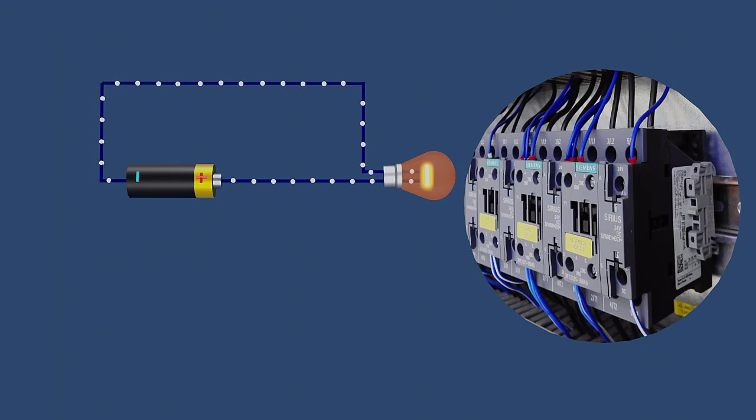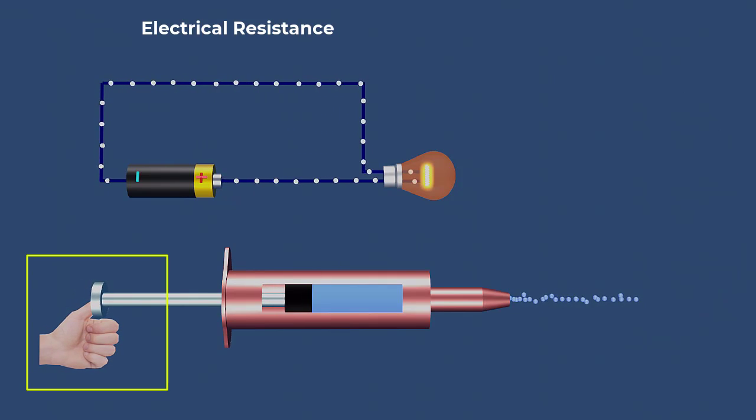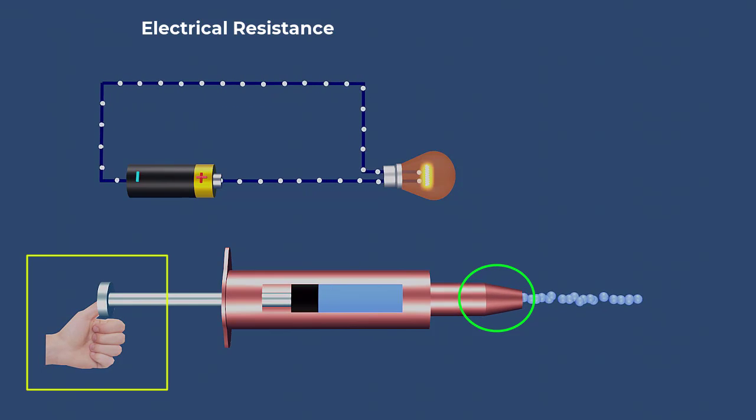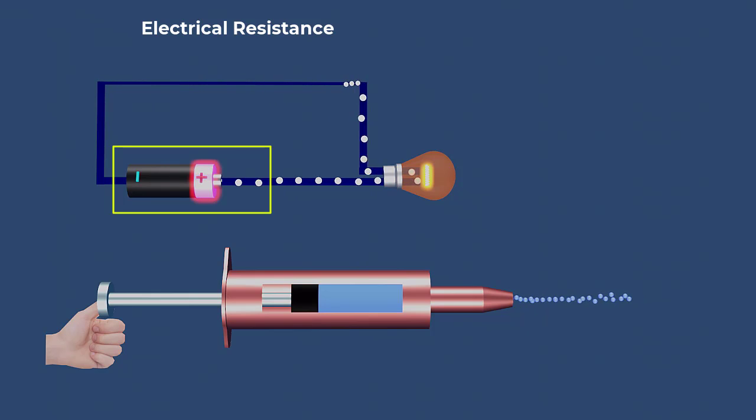Common household circuits are rated at 15 to 20 amperes. The flow of a fluid through a pipe depends on the pressure and the size of the pipe. Similarly, electric current depends on the applied voltage and the size of the conductor.